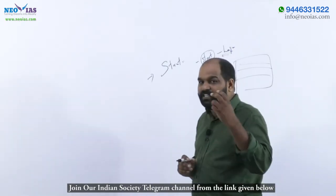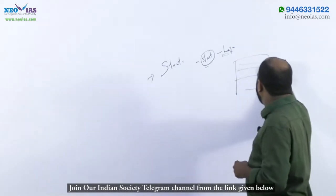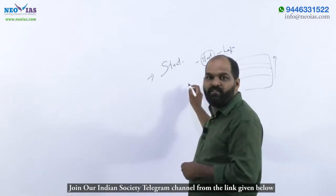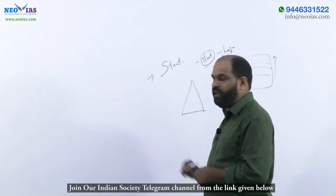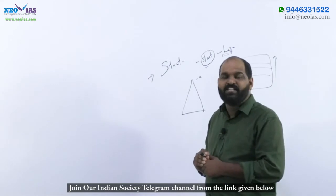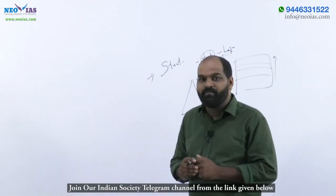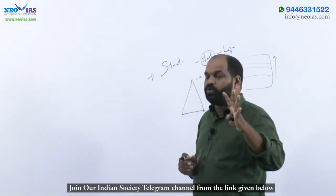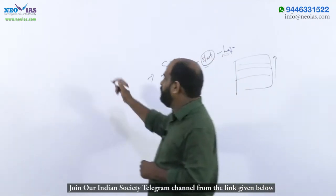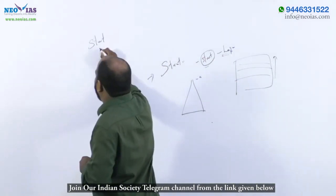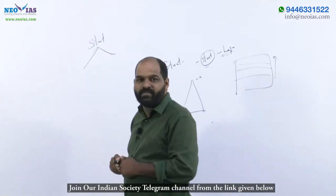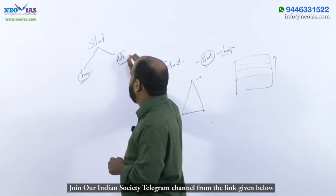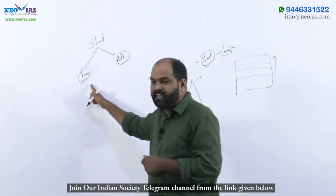There is a problem — people tend to assume that social stratification is always vertical. When you hear social stratification, we think about a pyramid with upper class and lower class. But it is not always like that. According to Dipankar Gupta's sociology, social stratification is a more complicated concept.